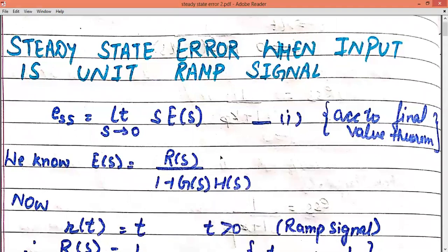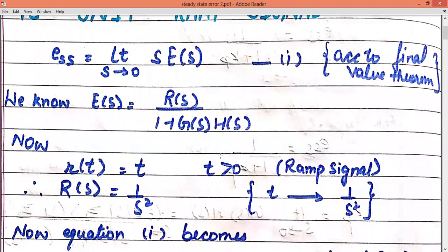Now what we are going to do is implement the ramp signal here, as we have implemented the unit step signal. For the ramp signal, we know that R(t) equals to t, where the ramp signal is for t greater than 0. We know the Laplace transformation, so we write R(S) equals to 1 upon S squared. Please go through the Laplace transformation formulas already provided, and kindly learn the formulas so that it will be easy to implement.